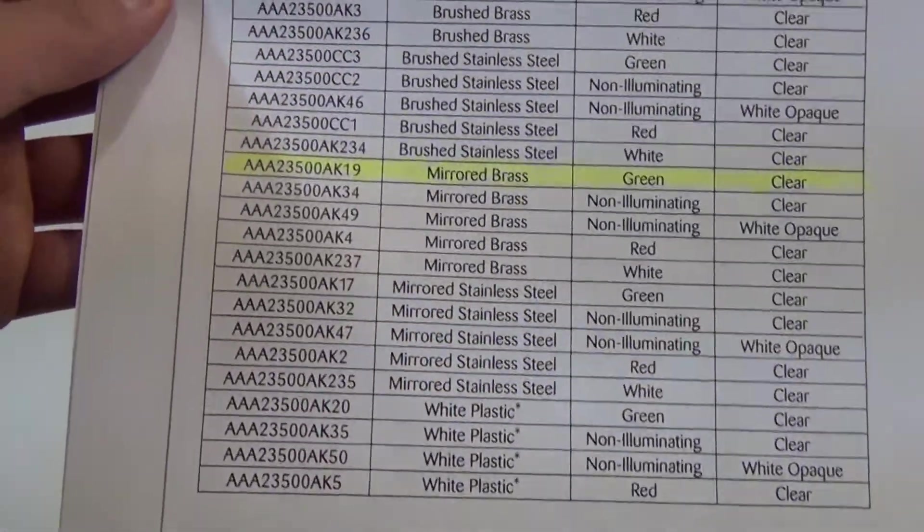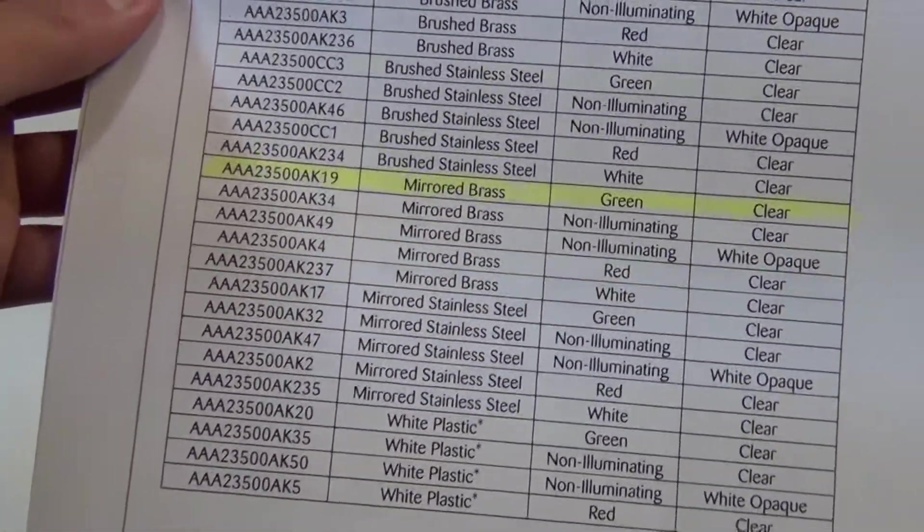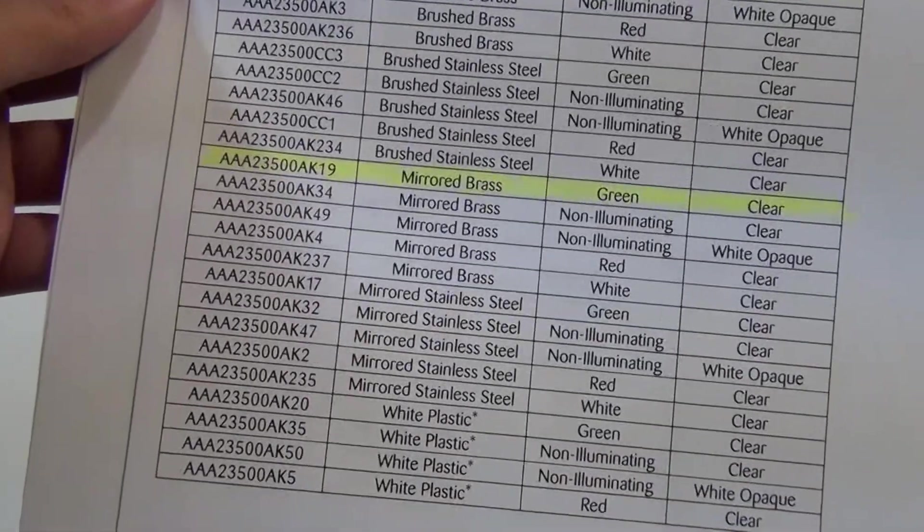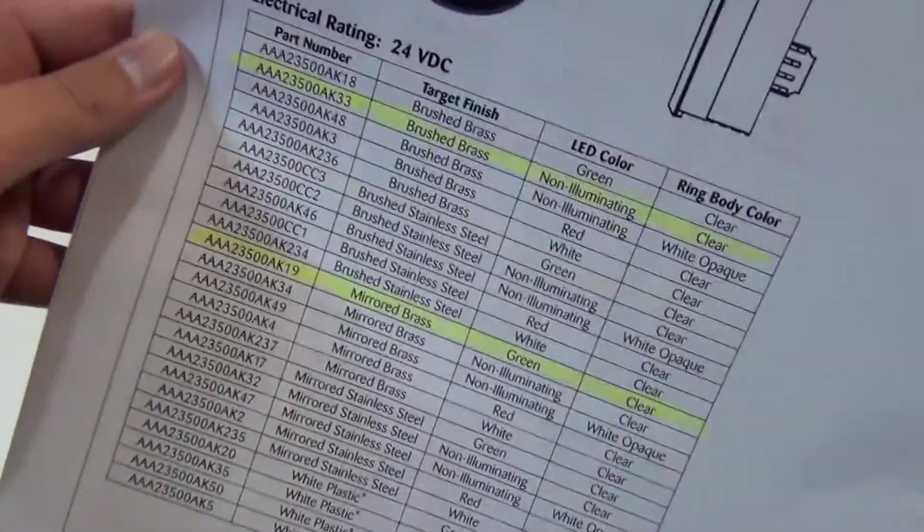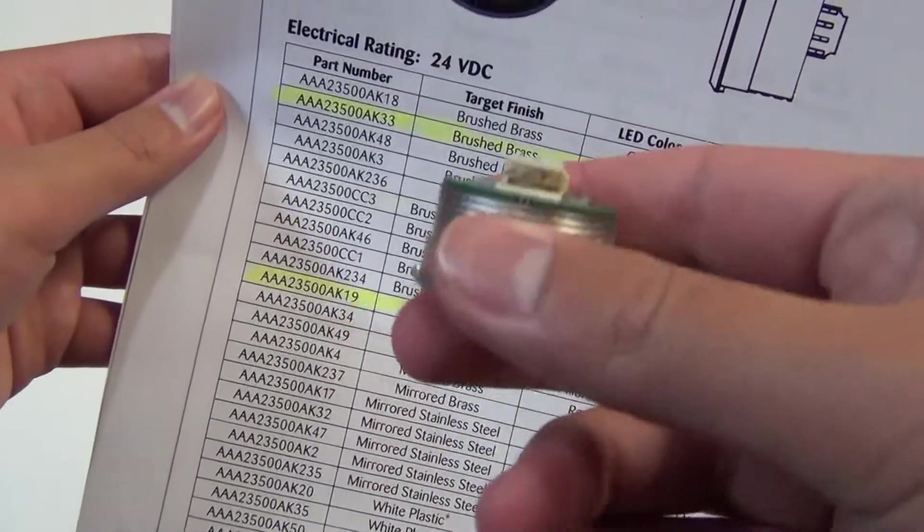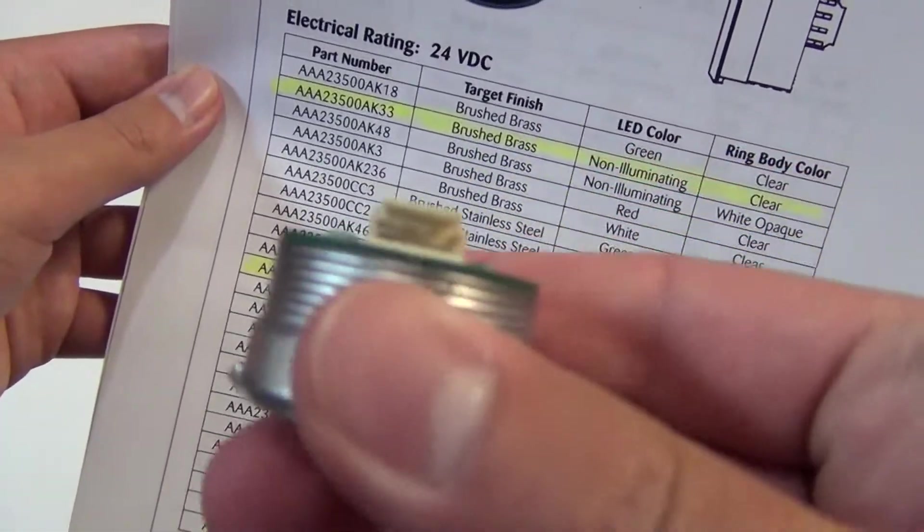Also we have a AAA23500AK19 mirrored brass green LED that has an amp connector like you saw on this button. I still need to get the connector so that way I can wire it up.